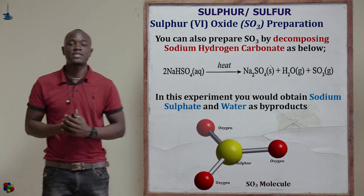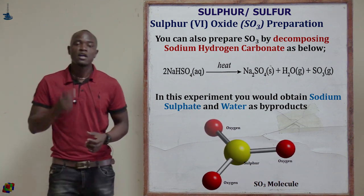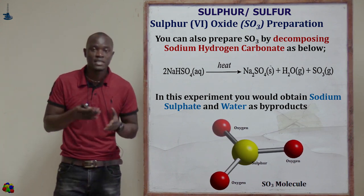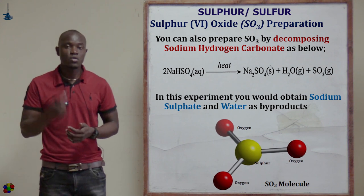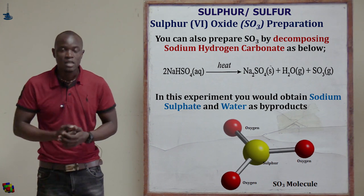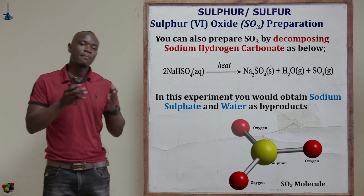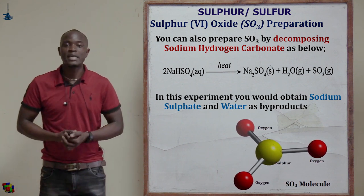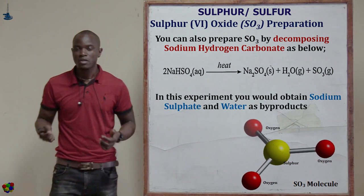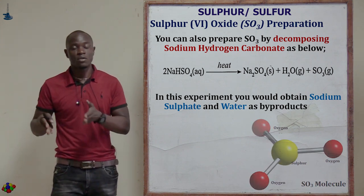There is another method of preparing sulfur 6 oxide in the laboratory, whereby we decompose sodium hydrogen sulfate. If we decompose sodium hydrogen sulfate, we get sodium sulfate, plus water, plus sulfur 6 oxide gas. This is also another method by which we can prepare sulfur 6 oxide in the lab.